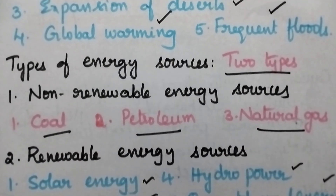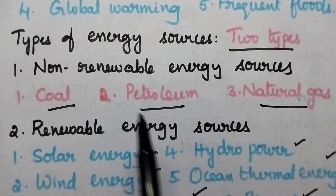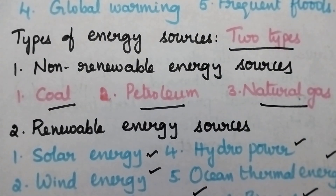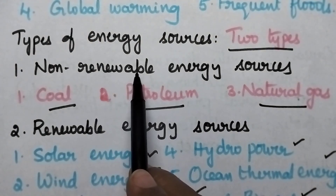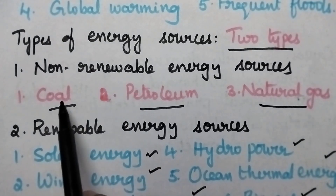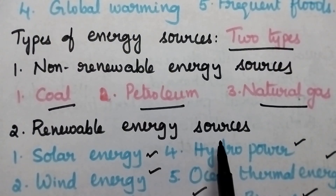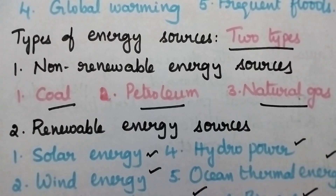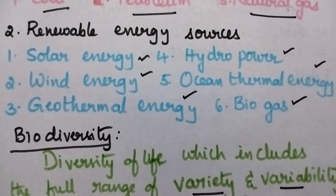Coming to energy resources, they can be classified into two types: non-renewable energy resources and renewable energy resources. Non-renewable resources, also called conventional energy resources, include coal, petroleum and natural gas. Renewable energy resources, also called non-conventional energy resources, include solar energy, wind energy, geothermal energy, hydro power, ocean thermal energy and biogas.